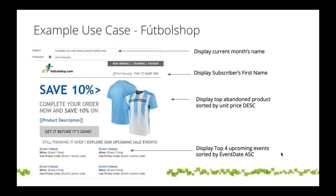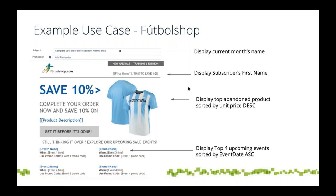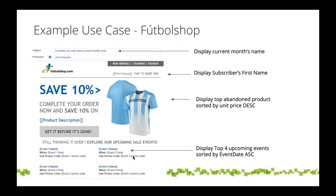The requirements: they want to display the current month name in the subject line, display the subscriber's first name, and display the top abandoned product by unique price. This is an abandoned cart email — it shows a featured product and says 'complete your order before the end of the month to save 10 percent.' They also want to display the top four upcoming sales events sorted from soonest to latest, with each event's name and promo code.